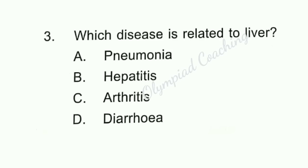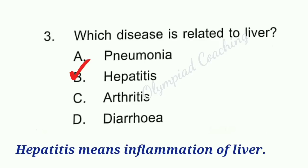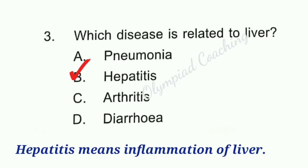Question number 3: Which disease is related to the liver? Option A — Pneumonia. Option B — Hepatitis. Option C — Arthritis. Option D — Diarrhea. Option B is correct. Hepatitis is related to the liver. Hepatitis means inflammation of the liver. When the liver is inflamed or damaged, its function can be affected.